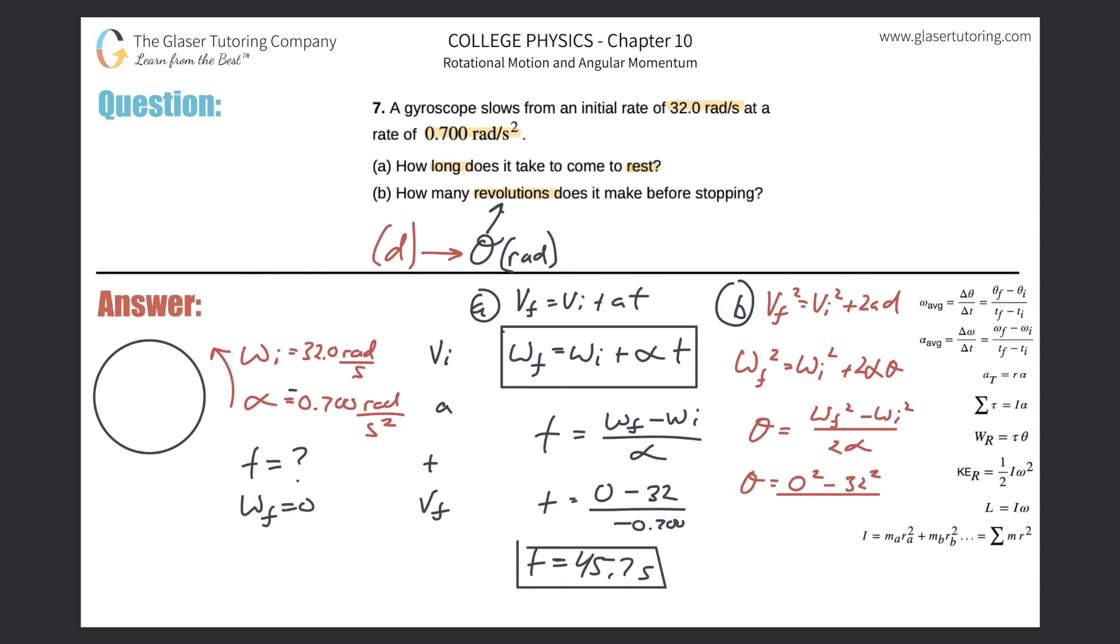Divide this now by two times your angular acceleration, which was negative 0.7, and just now plug it all into the calculator. So there's going to be 32 squared divided by two times 0.7, comes out to be a positive answer.